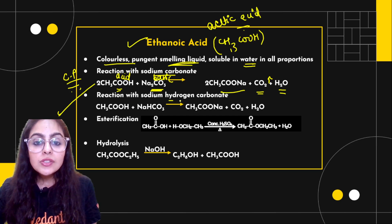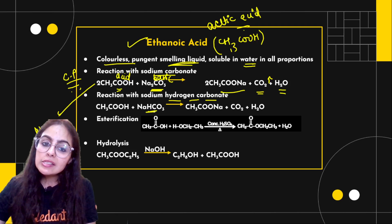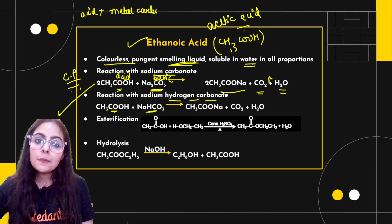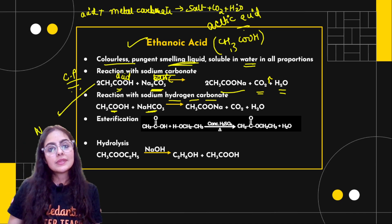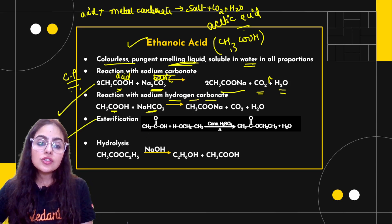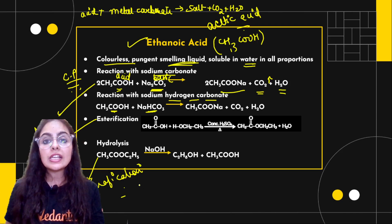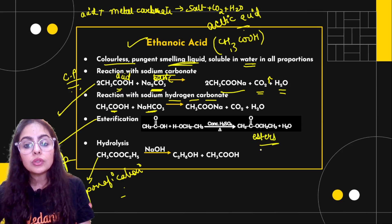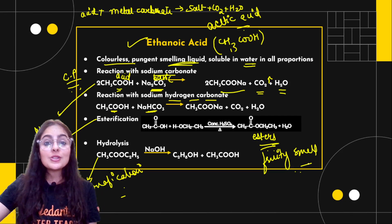Reaction with sodium hydrogen carbonate: the same principle applies — carbonate or bicarbonate reacts with this acid. Since it's acid reacting with a carbonate, the products are carbon dioxide and water. Then comes the esterification reaction, which is very important. You can be directly asked: 'Explain esterification reaction' or 'Write the esterification reaction.' Ester formation — esters have a fruity smell that is very sweet, and you can literally smell that fruity smell from test tubes in the lab.